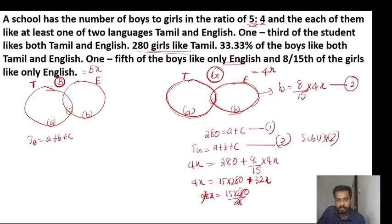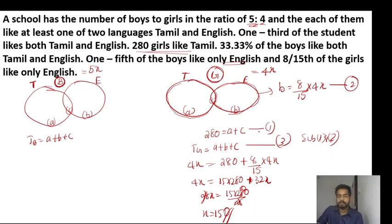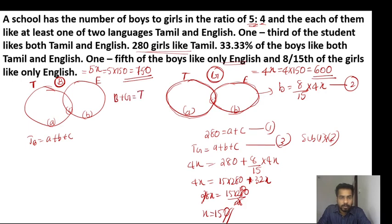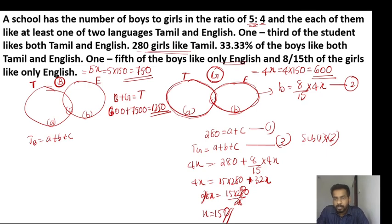Solving: 28x, so x is equal to 150. Total girls equals 5x — 5 into 150 equals 750. Wait, total girls equals 4x equals 600. Total boys — boys plus girls gives total students. Boys equals 5x equals 750.